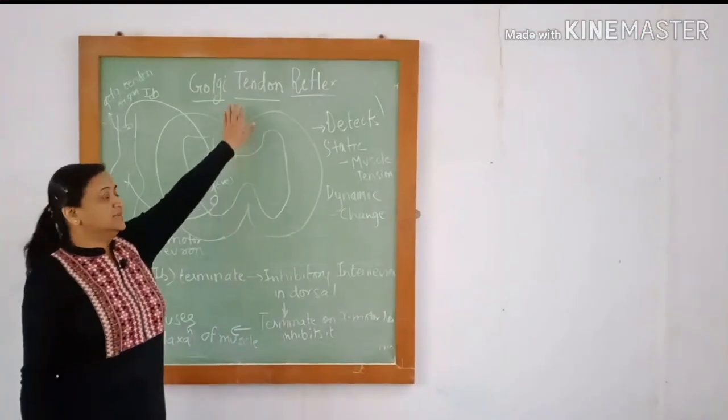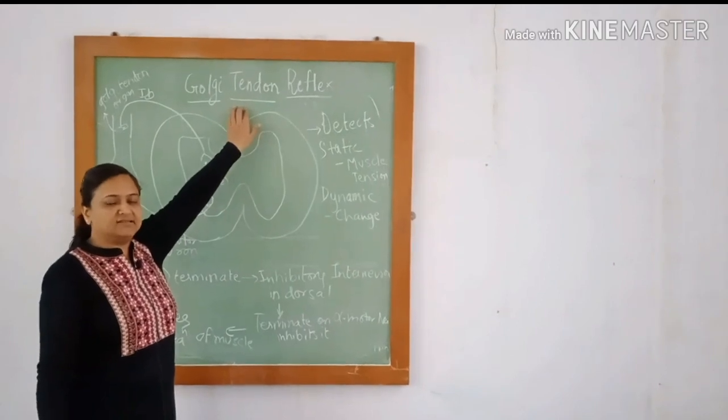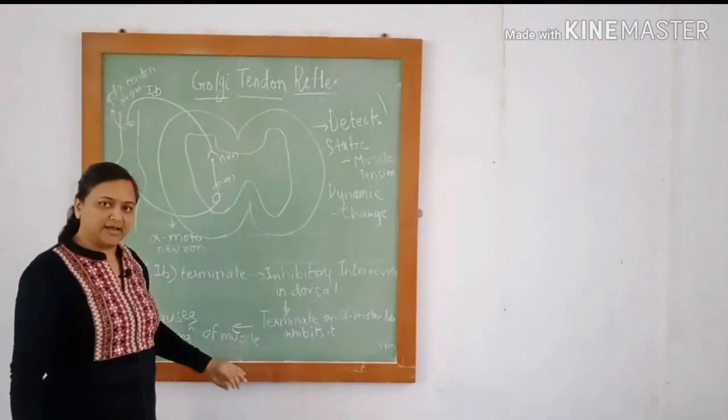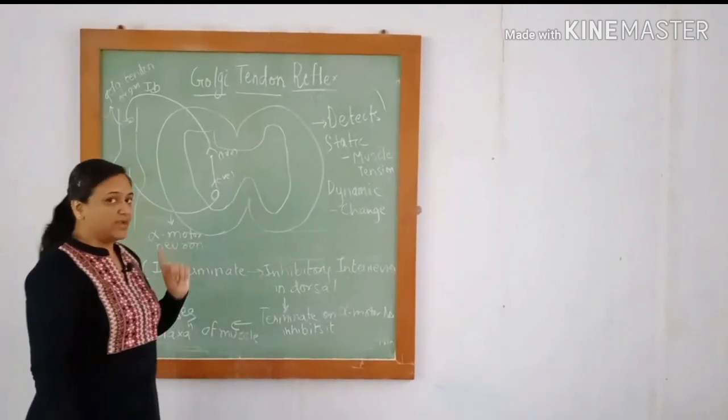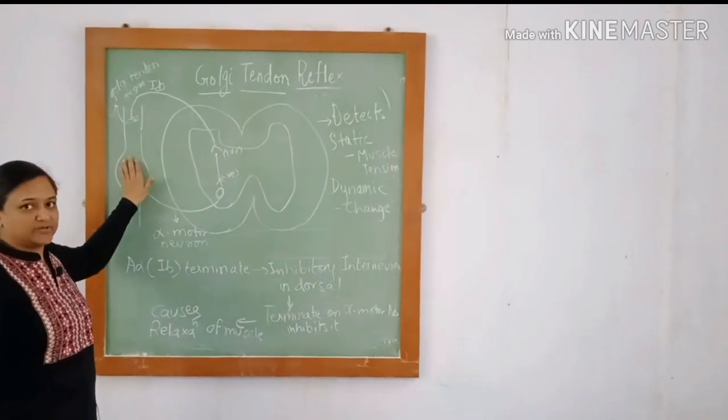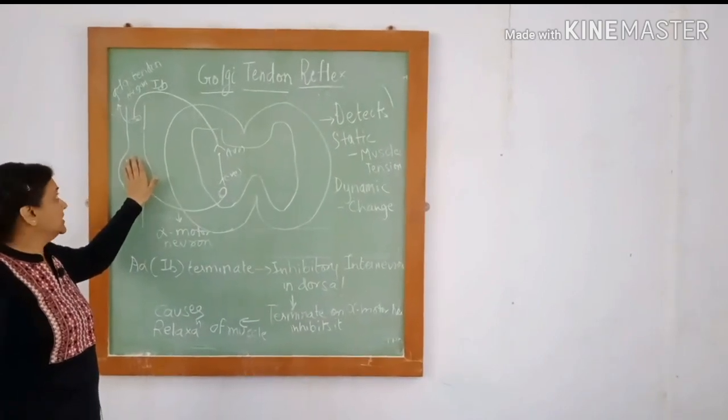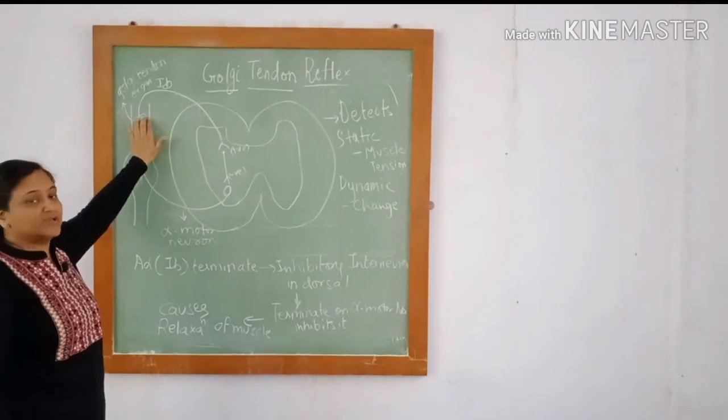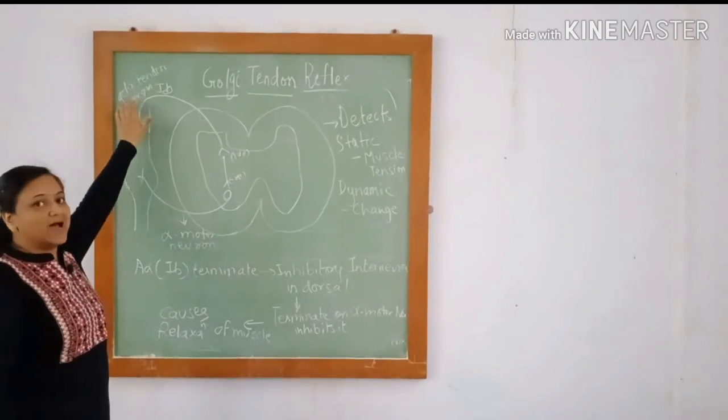The stimuli for Golgi tendon reflex is passive stretch or active contraction. Whenever there is excessive stretch of the muscle fiber, the 1B fibers in the Golgi tendon organ are activated.